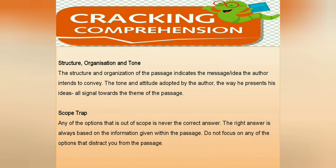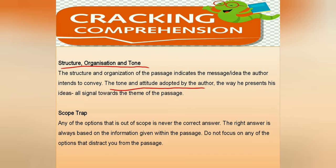If the writer is critically analyzing a topic, we need to understand what kind of tone he is adopting, how he has organized the passage, and what the structure is. The way he displays his tone or attitude, and the way he represents his ideas, all signal towards the theme of the passage. These things give us an indication of whether he is inclined towards that topic or has a favorable view of it. Such questions — does the author support this idea or not — can also be asked.